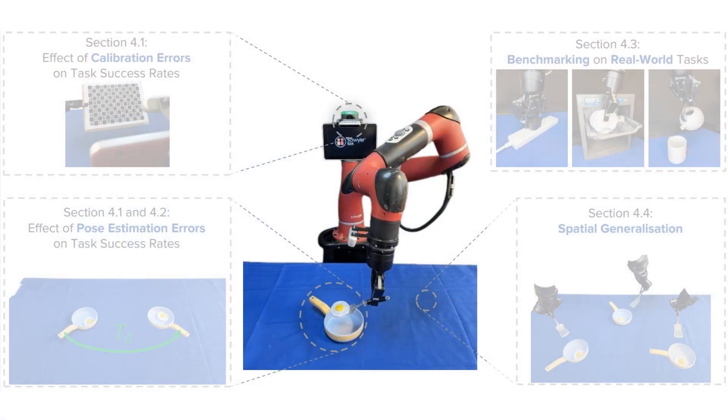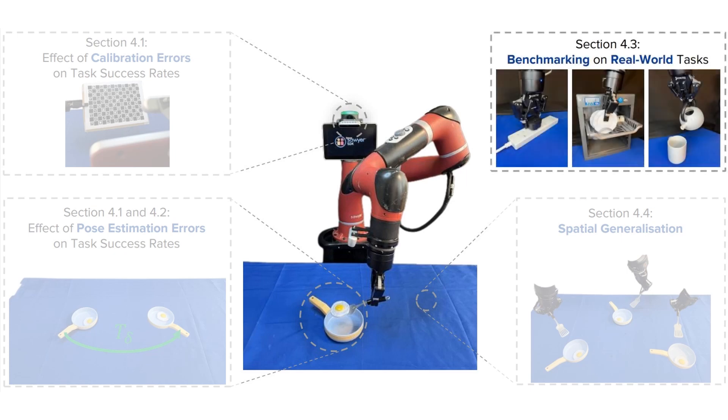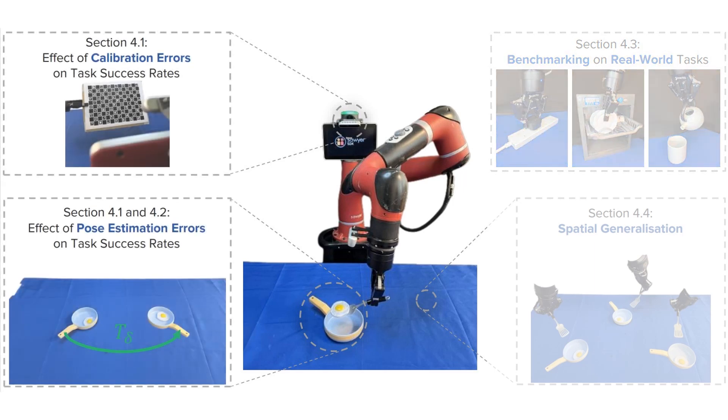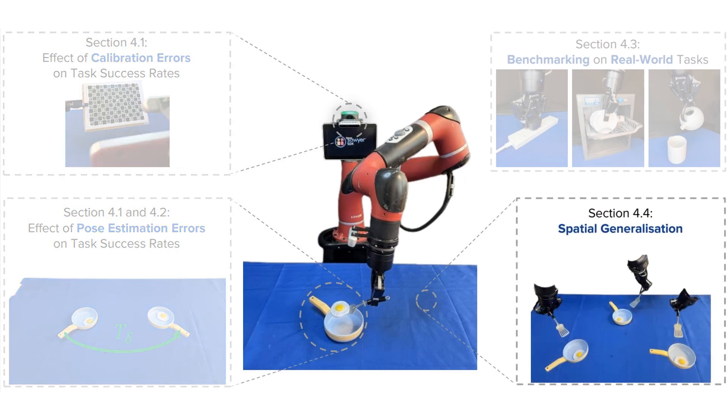To explore the utility of unseen object pose estimation for imitation learning, we provide an in-depth study of how state-of-the-art estimators perform for one-shot imitation learning on ten real-world tasks. We then take a deep dive into the effects of camera calibration and pose estimation errors on task success rates. We also investigate the spatial generalization capabilities of trajectory transfer and its robustness to changes in lighting conditions.